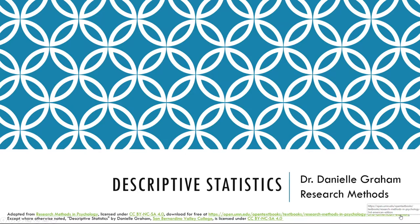We look first at some of the most common techniques for describing single variables, followed by some of the most common techniques for describing statistical relationships between variables. We then look at how to present descriptive statistics in writing and also in the form of tables and graphs that would be appropriate for an American Psychological Association, or APA, style research report. We end with some practical advice for organizing and carrying out your analyses.